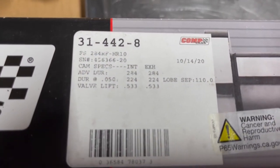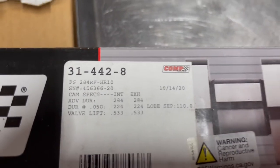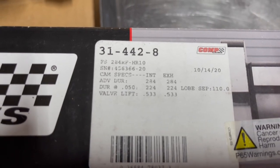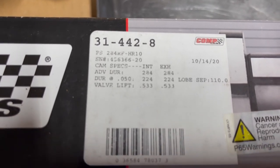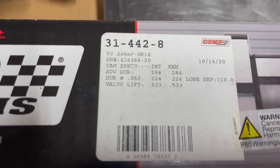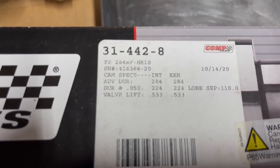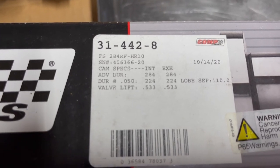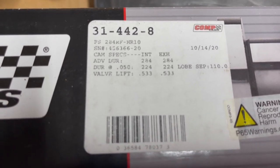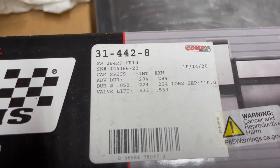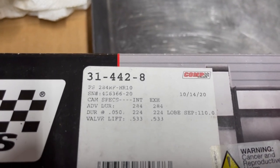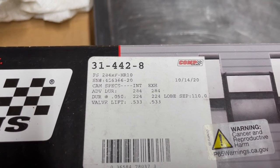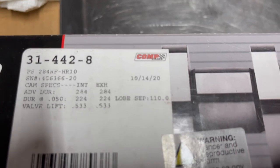Anyway, it's kind of hard to find information on that. Just in case anybody's interested, here's the specs on the cam. Looks like it's a 284 RF H-R10. RF must stand for roller, I guess. But it's a 284 advertised duration, intake and exhaust, and 224 at 50 thousandths. And the lift is 0.533. I believe my springs on my Promax heads are good for 0.55, something like that. They definitely have a little bit of room in there. And then the lobe separation is 110 degrees.